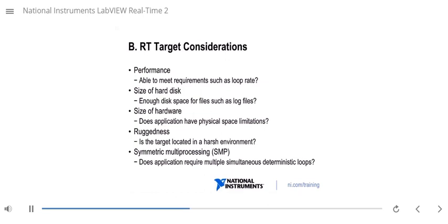Other thing to keep in mind is going to be symmetric multiprocessing capability. And basically, does the application require multiple simultaneous deterministic loops? Do you need to dedicate a core to more than one task on the system? If you need that, then you're going to need multiple places to run your code. Meaning the single core system may not be sufficient.